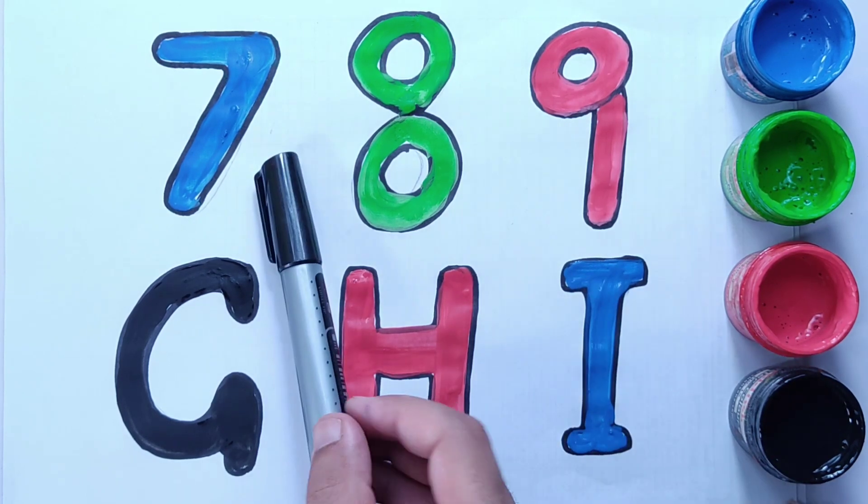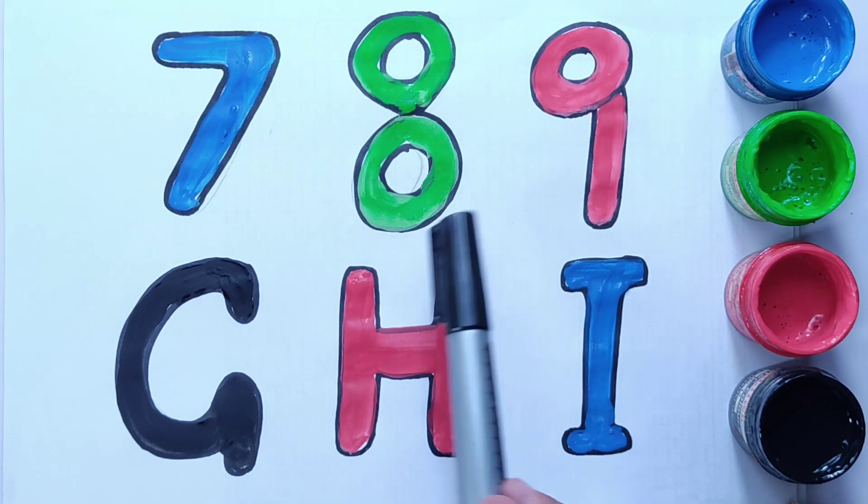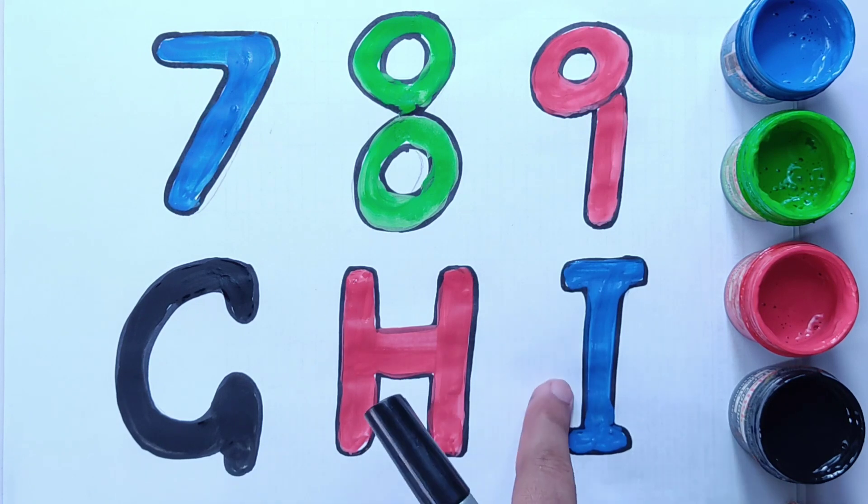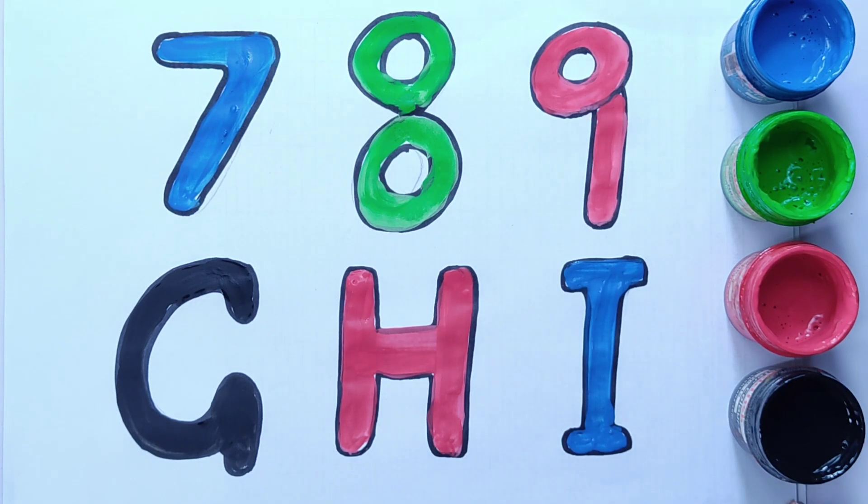Number 7, 8, 9 and letters G, H, I. That is super easy. I hope you learned. Like the video, share it, and subscribe to the channel.